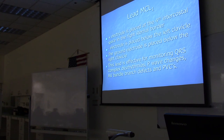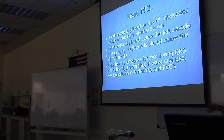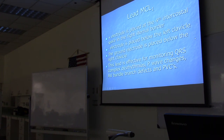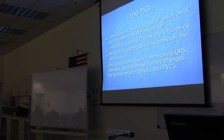MCL-1 is a popular lead in the ICU that uses a fourth electrode placed below the left clavicle. This lead is effective for monitoring QRS complex dysrhythmias, detecting P-wave changes, identifying bundle branch defects, and seeing PVCs clearly.